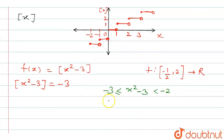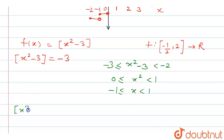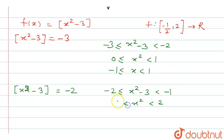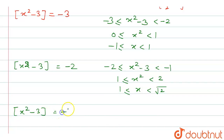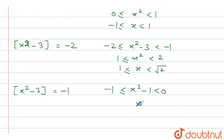For case 2: ⌊x²-3⌋ = -2, meaning x²-3 ∈ [-2, -1), so x² ∈ [1, 2), giving x ∈ [1, √2). For case 3: ⌊x²-3⌋ = -1, meaning x²-3 ∈ [-1, 0), so x² ∈ [2, 3), giving x ∈ [√2, √3).